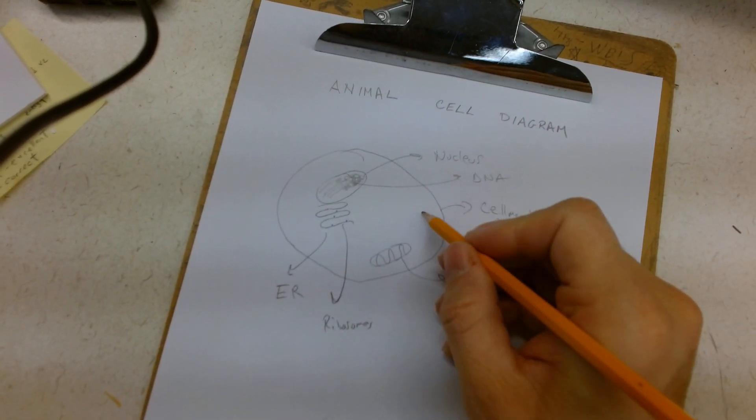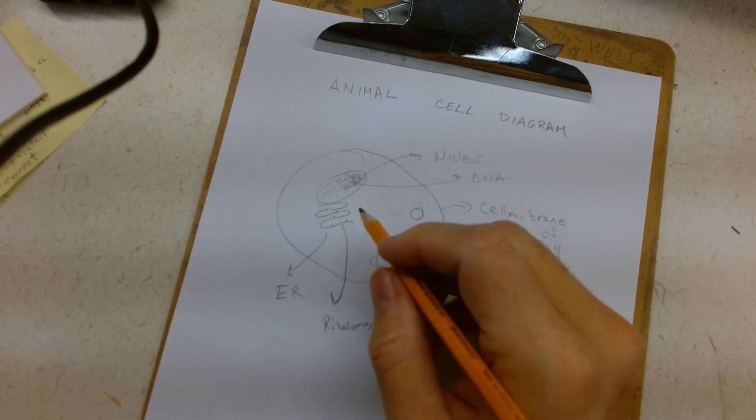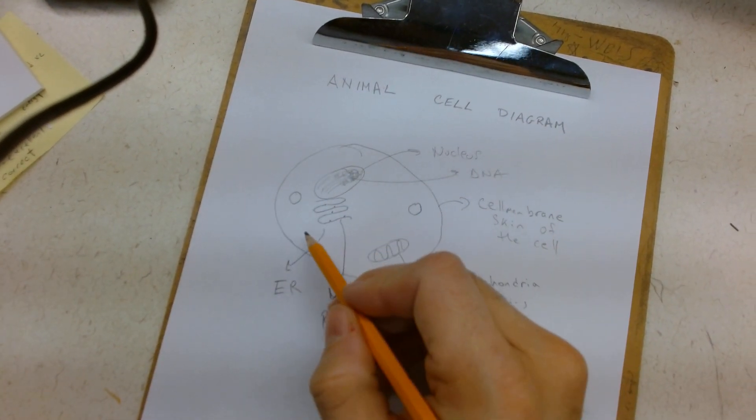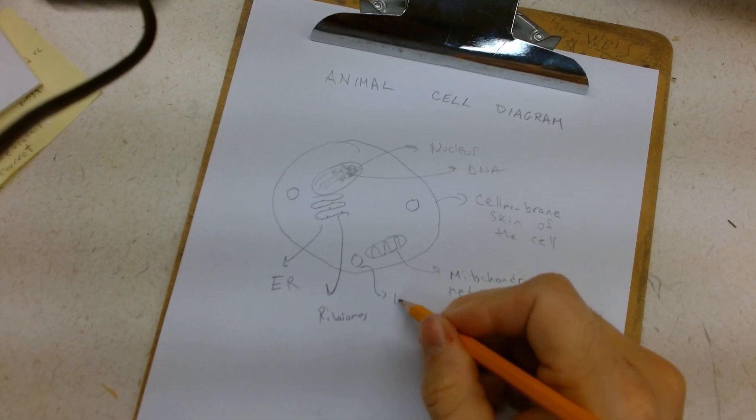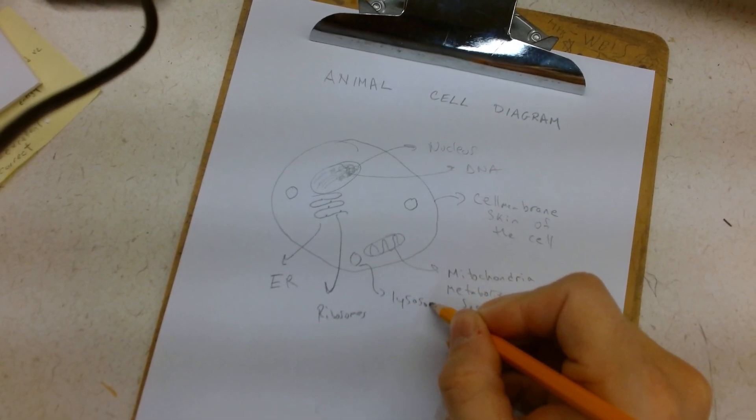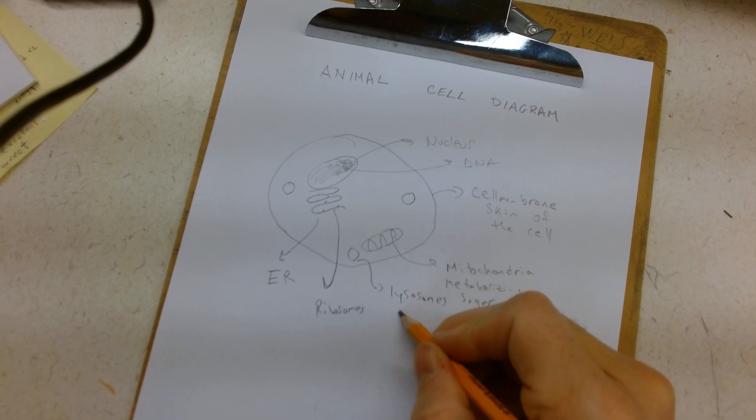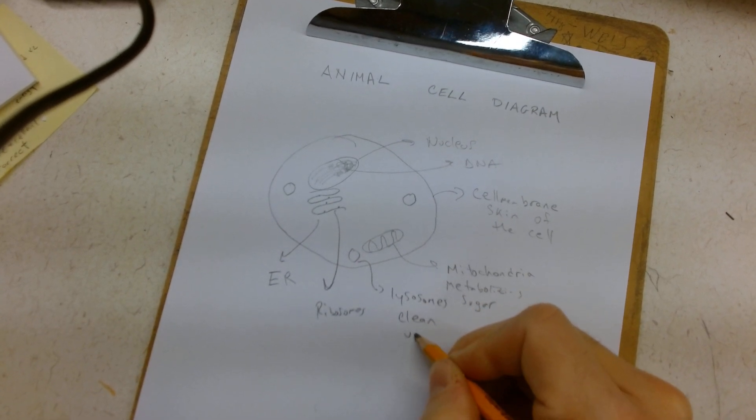Now, there's all kinds of stuff going on. There's going to be messes made, things broken down, and things that need to be removed from the cell. That's where we get the lysosomes. This is the cleanup crew of the cell.